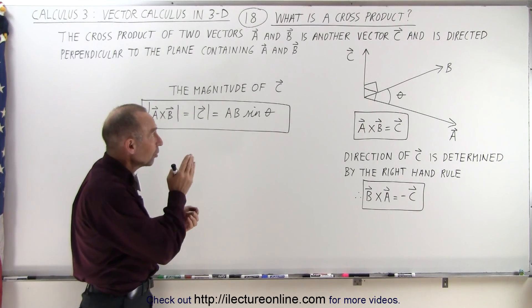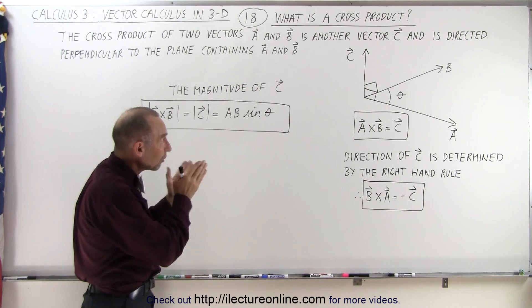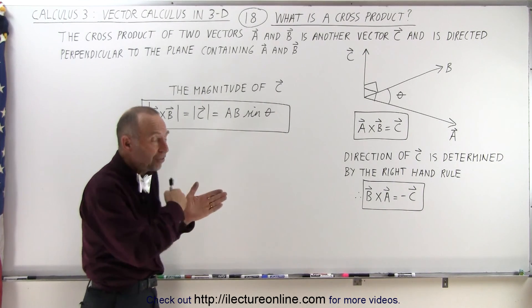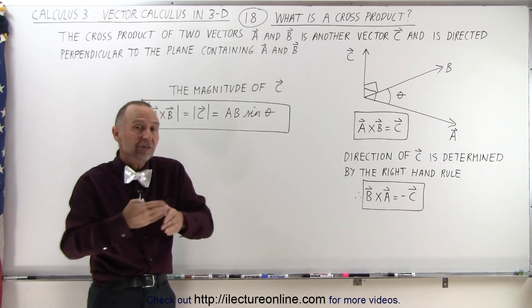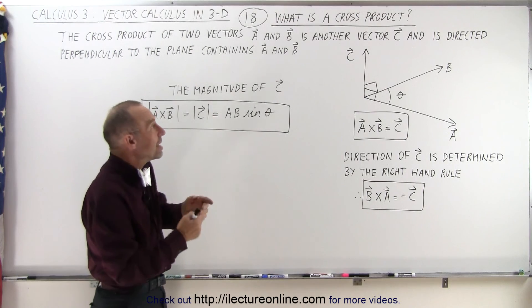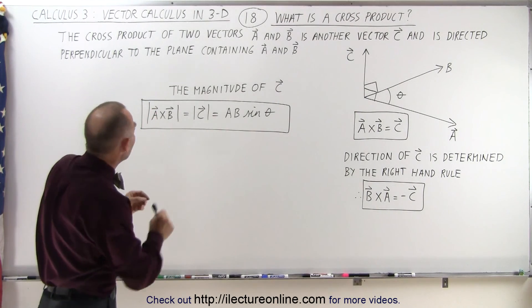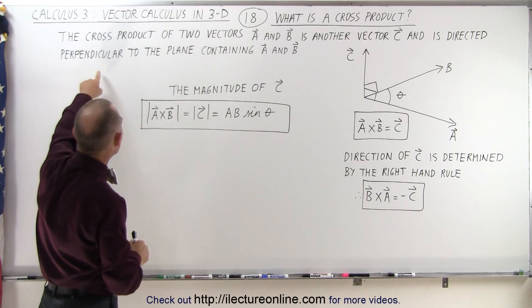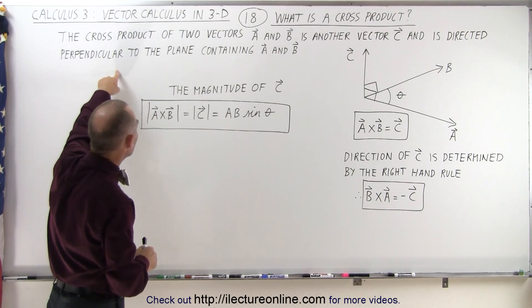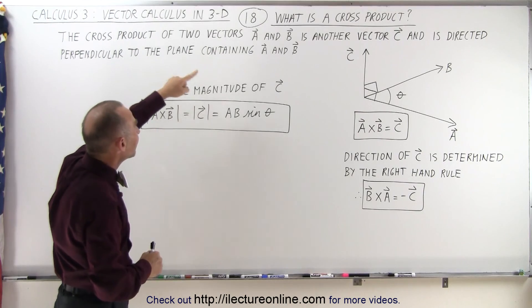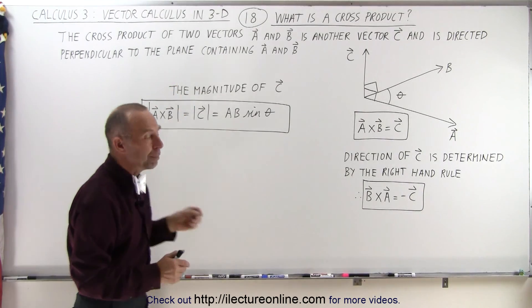But the resultant of a cross product is another vector, let's call it C, and the direction of that vector is perpendicular to the plane containing A and B.